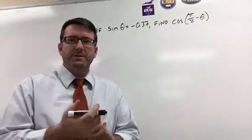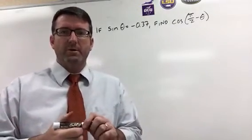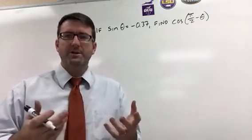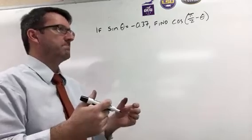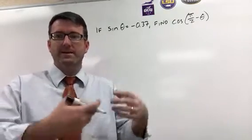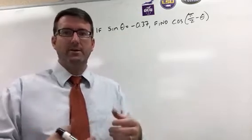Alright, so number two is pretty simple if we just remember our co-function identities. Remember the co-function identities relate sine to cosine and secant to cosecant and tangent to cotangent.